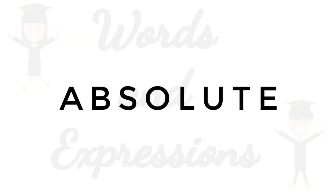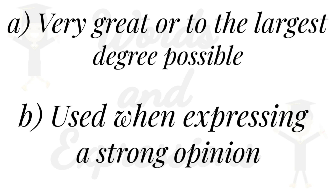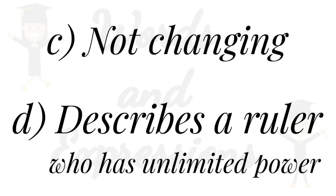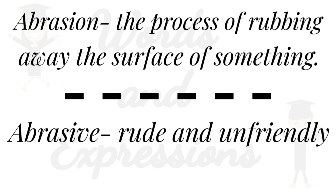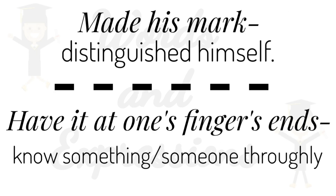Let us give a quick revision. 'Absolute' means: A) very great or to the largest degree possible; B) used when expressing a strong opinion; C) not changing — not dependent on anything else, true, right, or the same in all situations; D) describes a ruler who has unlimited power. 'Abrasion': the process of rubbing away the surface of something. 'Abrasive': rude and unfriendly. 'Made his mark': distinguished himself. 'Have it at one's fingers ends': knows something or someone thoroughly.